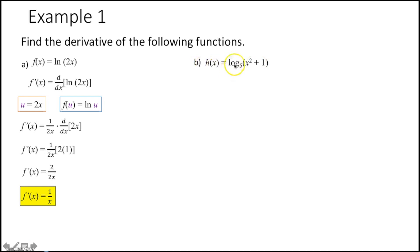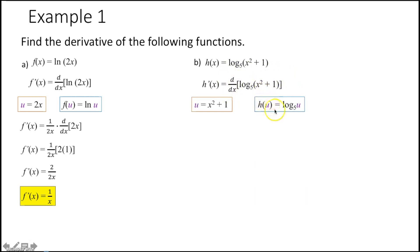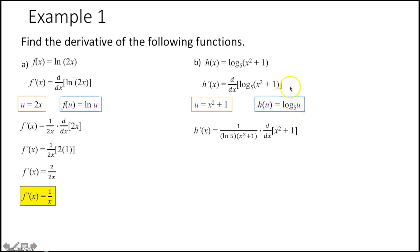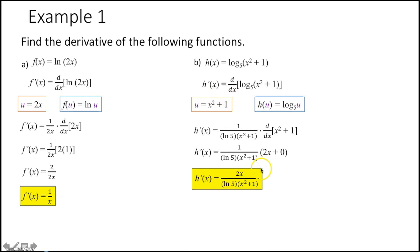Part b: h(x) = log base 5 of (x² + 1). This requires the chain rule — we have a function within a function. Our inner function is u = x² + 1, and our outer function is log base 5 of u. We take the derivative of the outer function: 1 over (ln(5) times u). Then multiply by the derivative of the inner function, which is the derivative of x² + 1, giving 2x. Put 2x in the numerator and you're done.